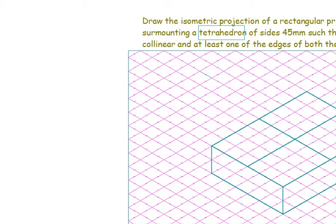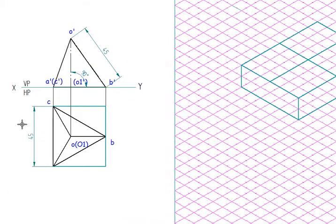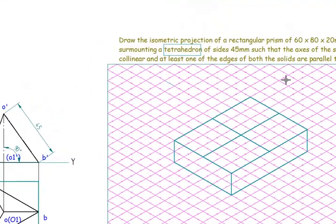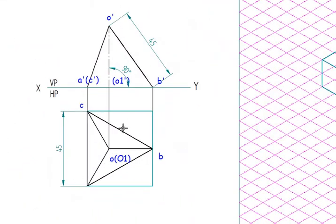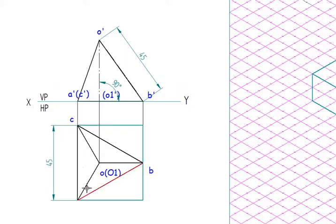Next thing is I need to draw the tetrahedron. I have drawn the orthographic projections for the tetrahedron of side length 45. When you want to draw the tetrahedron, draw the top view triangle, then project it. The axis length is what we need to find. This is the corner, this is the true length. I need to cut in a radius of 45.